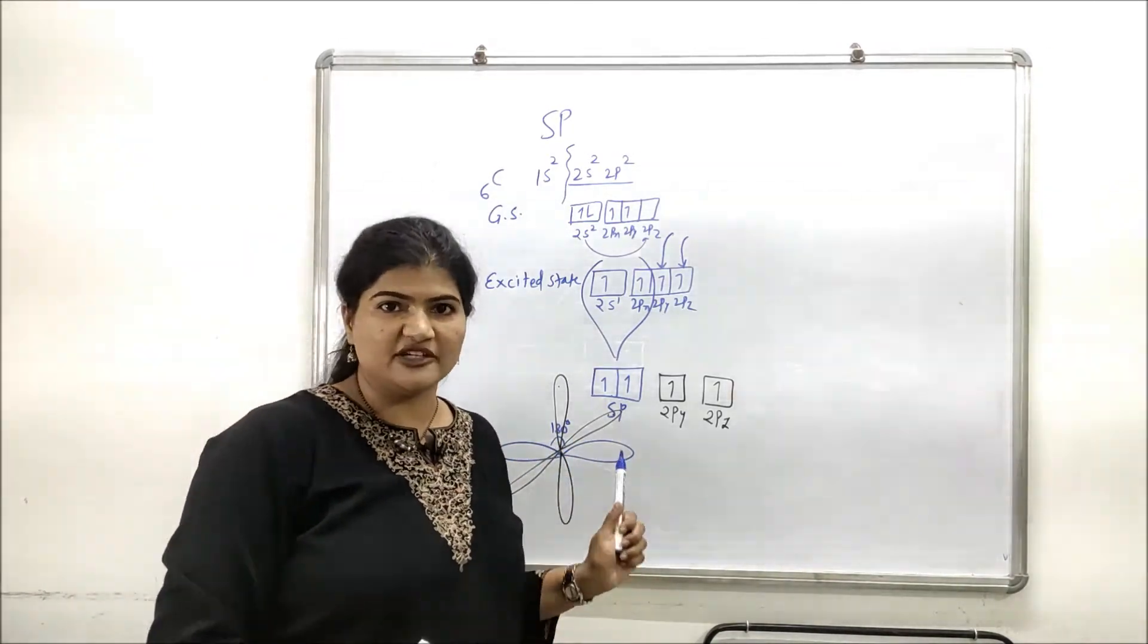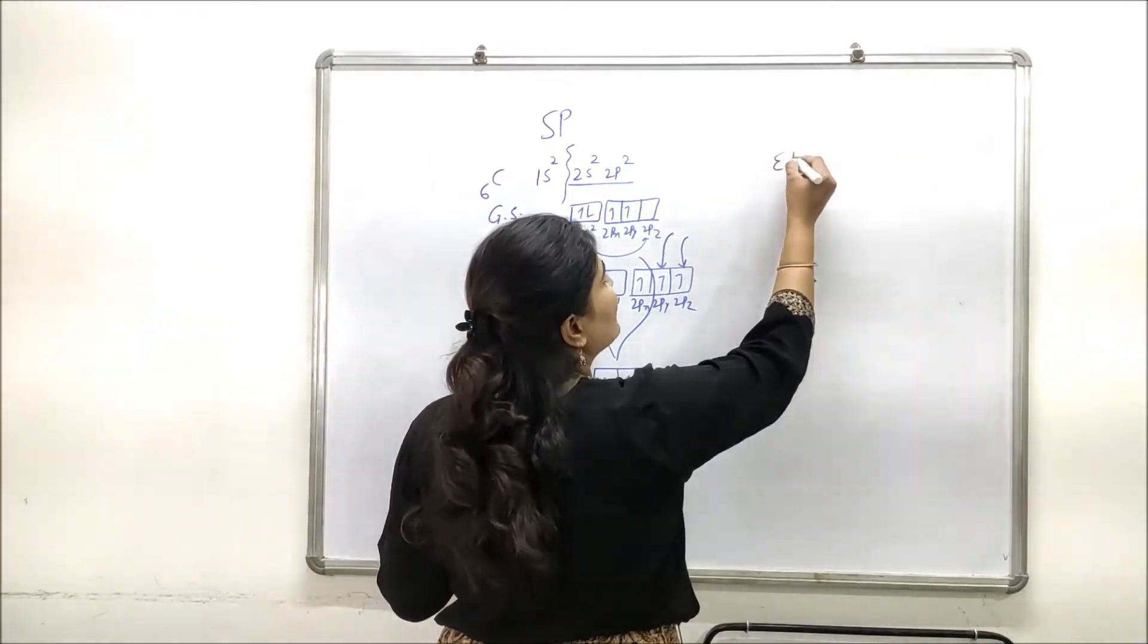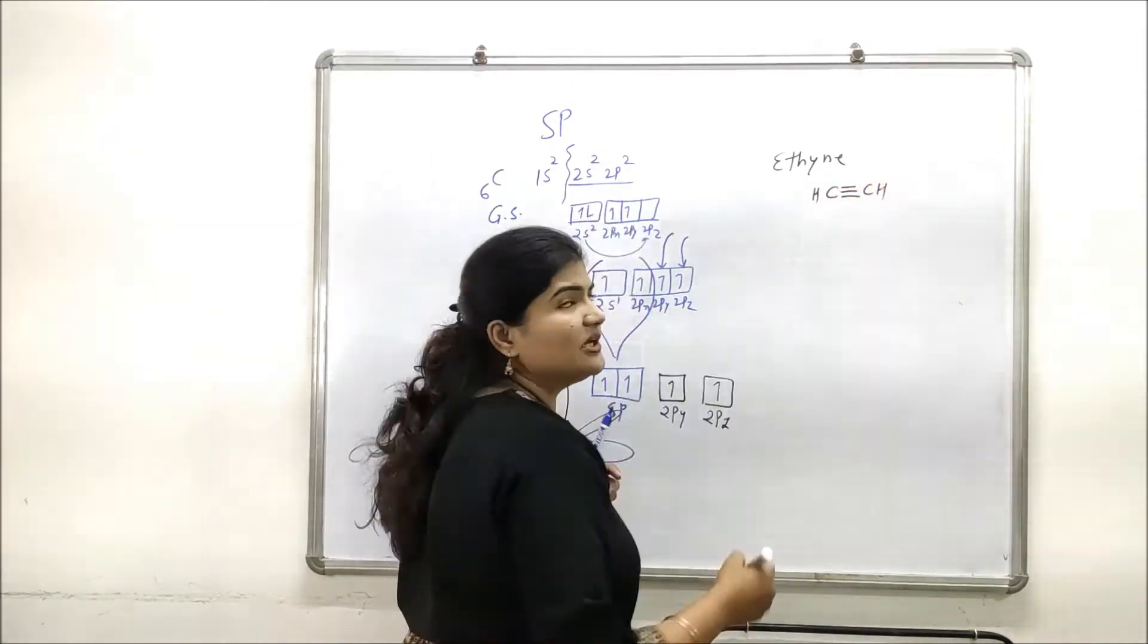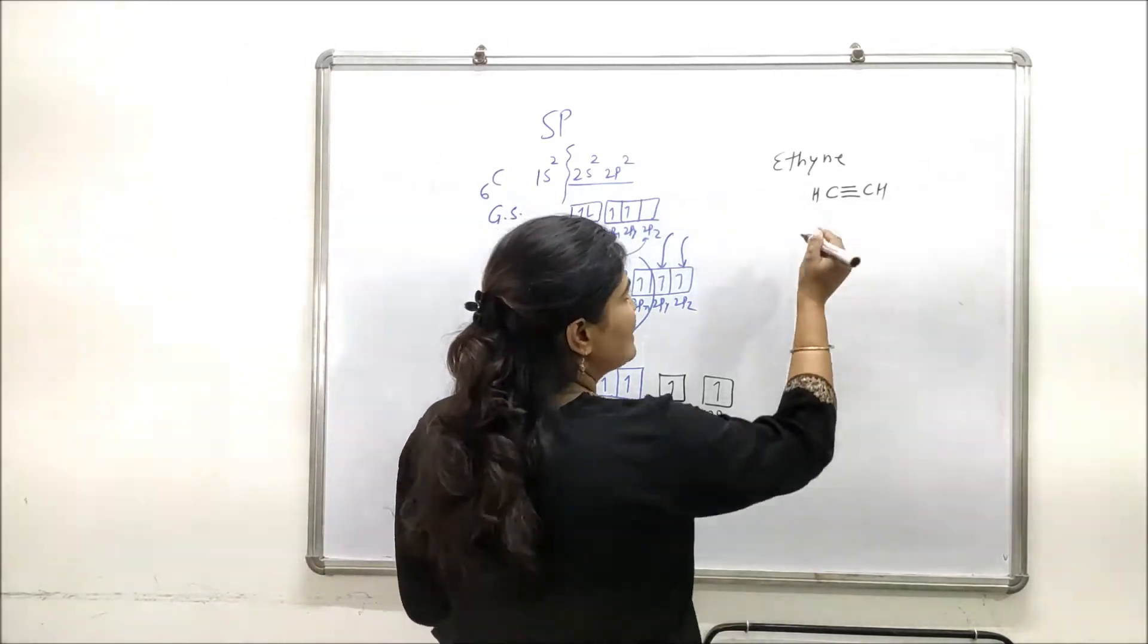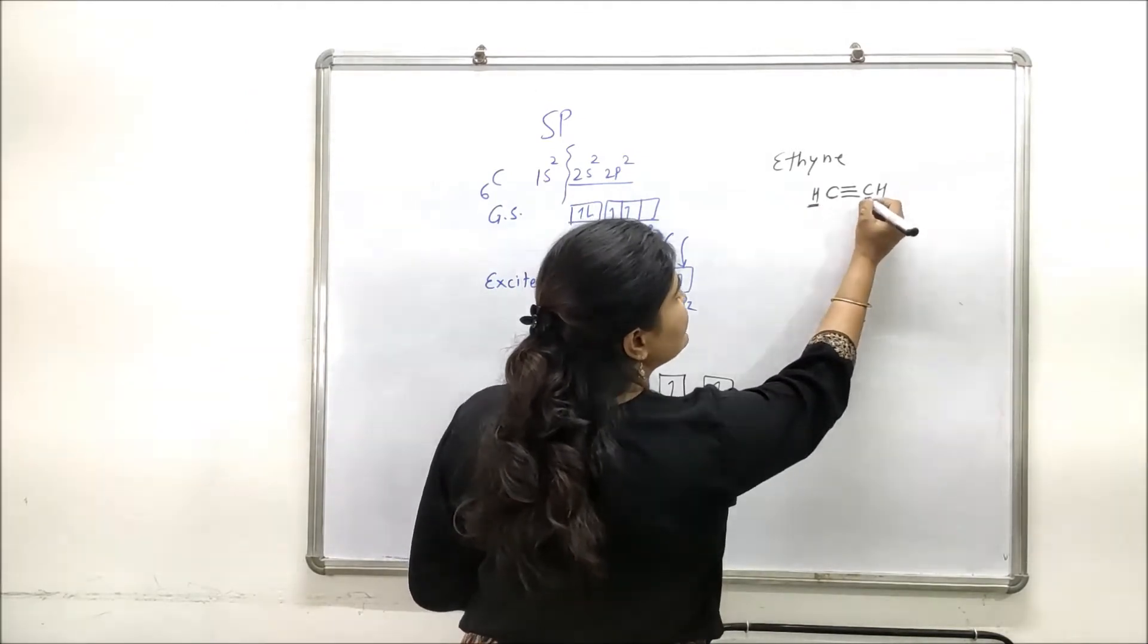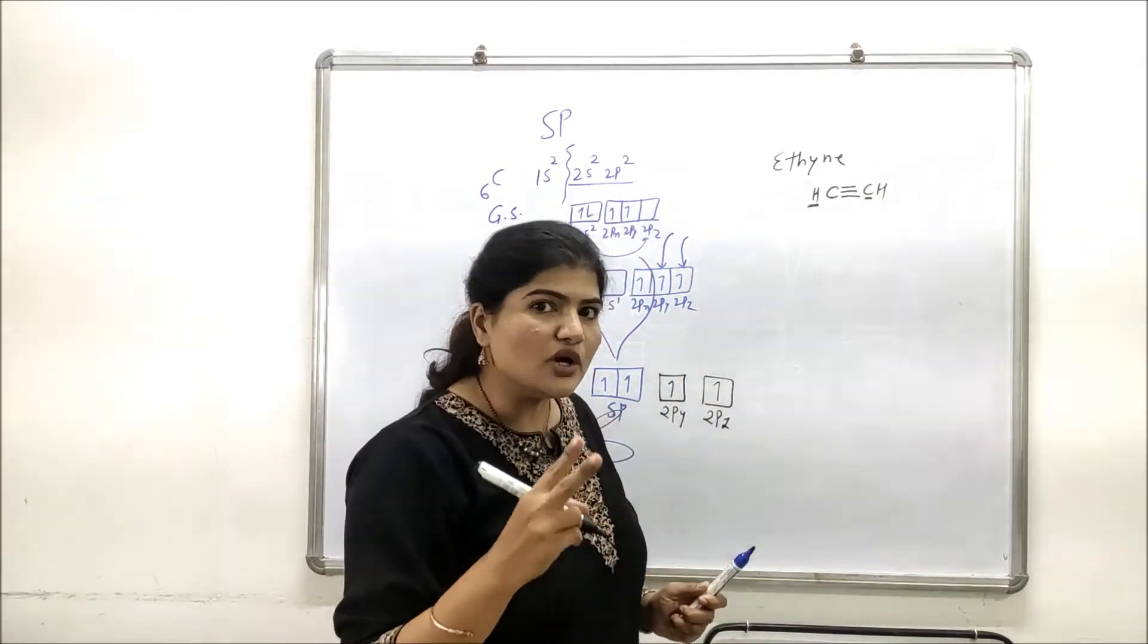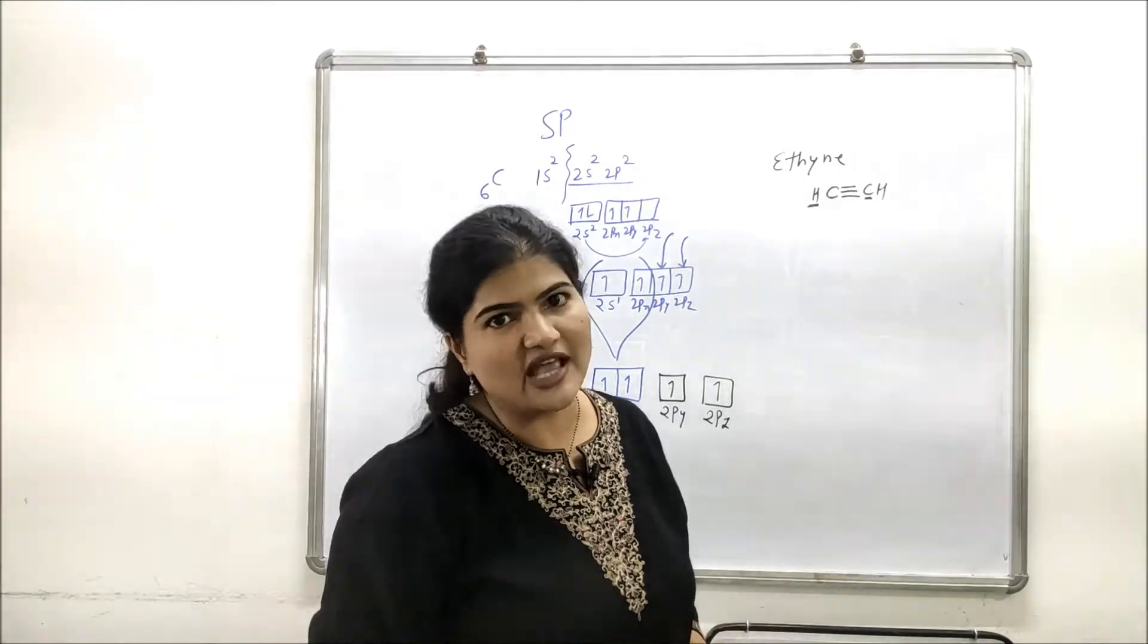Let's discuss the orbital picture for ethyne or acetylene to understand how the triple bond formation process actually works. In ethyne or acetylene, this carbon is bonded to this hydrogen and this carbon, only two other atoms. Similarly, this carbon is also bonded to carbon and hydrogen, only two other atoms. So carbon definitely is in its sp hybridized state.